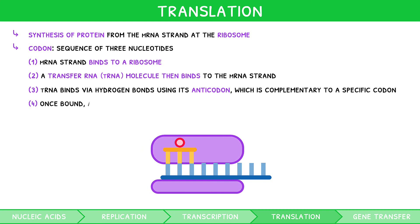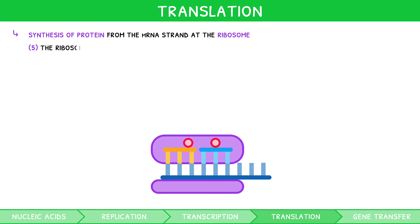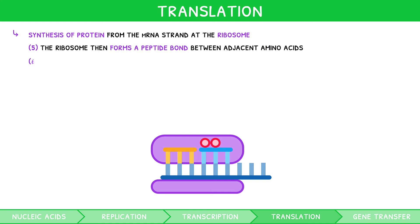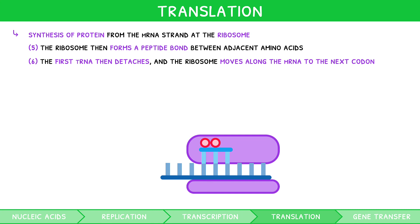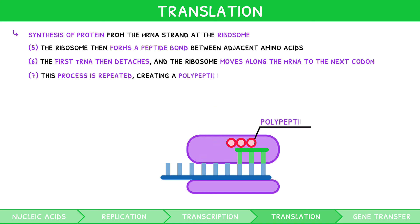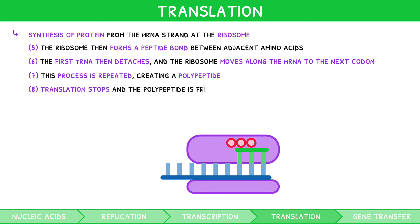The tRNA is also associated with an individual amino acid, and so this is bound too. Once bound, a second tRNA binds to the next codon. The ribosome then forms a peptide bond between the two adjacent amino acids on the first and second tRNA. The first tRNA then detaches, and the ribosome moves along the mRNA to the next codon so that another tRNA can bind. This process is repeated, creating a string of amino acids known as a polypeptide, i.e., a protein. Eventually, translation stops, and the string of amino acids is free to detach.